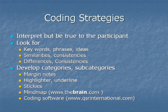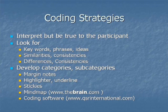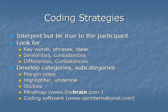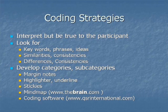What do we mean by coding and how might you go about it? Essentially you're looking for keywords, phrases, and ideas that arise directly from the data. You're looking for similarities and consistencies in what the participants say, but also differences, inconsistencies, and contradictions. You're looking to develop categories and subcategories. You might record those with margin notes, using a highlighter, underlining keywords, or using sticky notes. You might use a mind-mapping approach — on paper or using software available from the website on the slide — and there are also specialized coding softwares such as NVivo, which you can look at on the website as well.